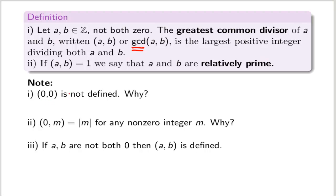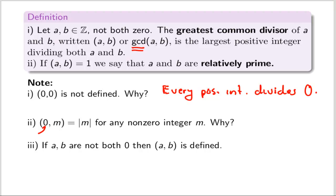Why did I leave off (0, 0) from the definition? The problem is every positive integer is a factor of zero, so you'd have no largest common factor. If one entry is zero and the other is not zero, then every number is a factor of zero, so I just focus on m and ask what's the largest factor m can have — it's just itself, unless m is negative, in which case we take its absolute value because the GCD is always a positive quantity.